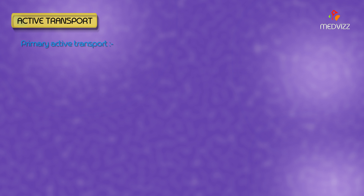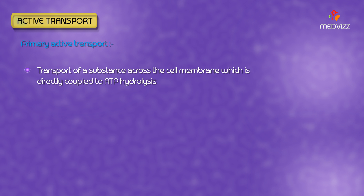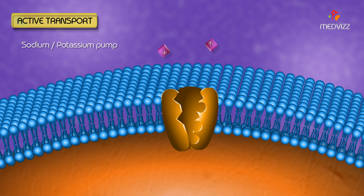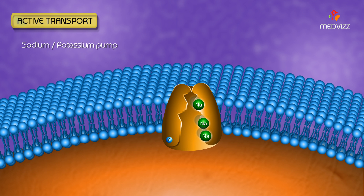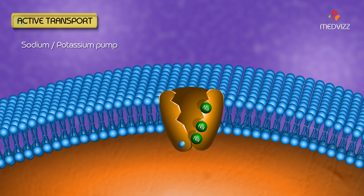Primary Active Transport. It is the transport of a substance across the cell membrane which is directly coupled to ATP hydrolysis. An example is the sodium-potassium ATPase pump in the cell membrane, which pumps 2 potassium ions inside the cell and 3 sodium ions outside the cell.